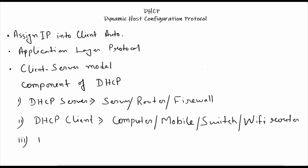The third component of DHCP is the DHCP relay agent. A DHCP relay agent is a kind of host that forwards DHCP packets between the client and server. It acts as an agent responsible for sharing or sending packets between the server and the client.